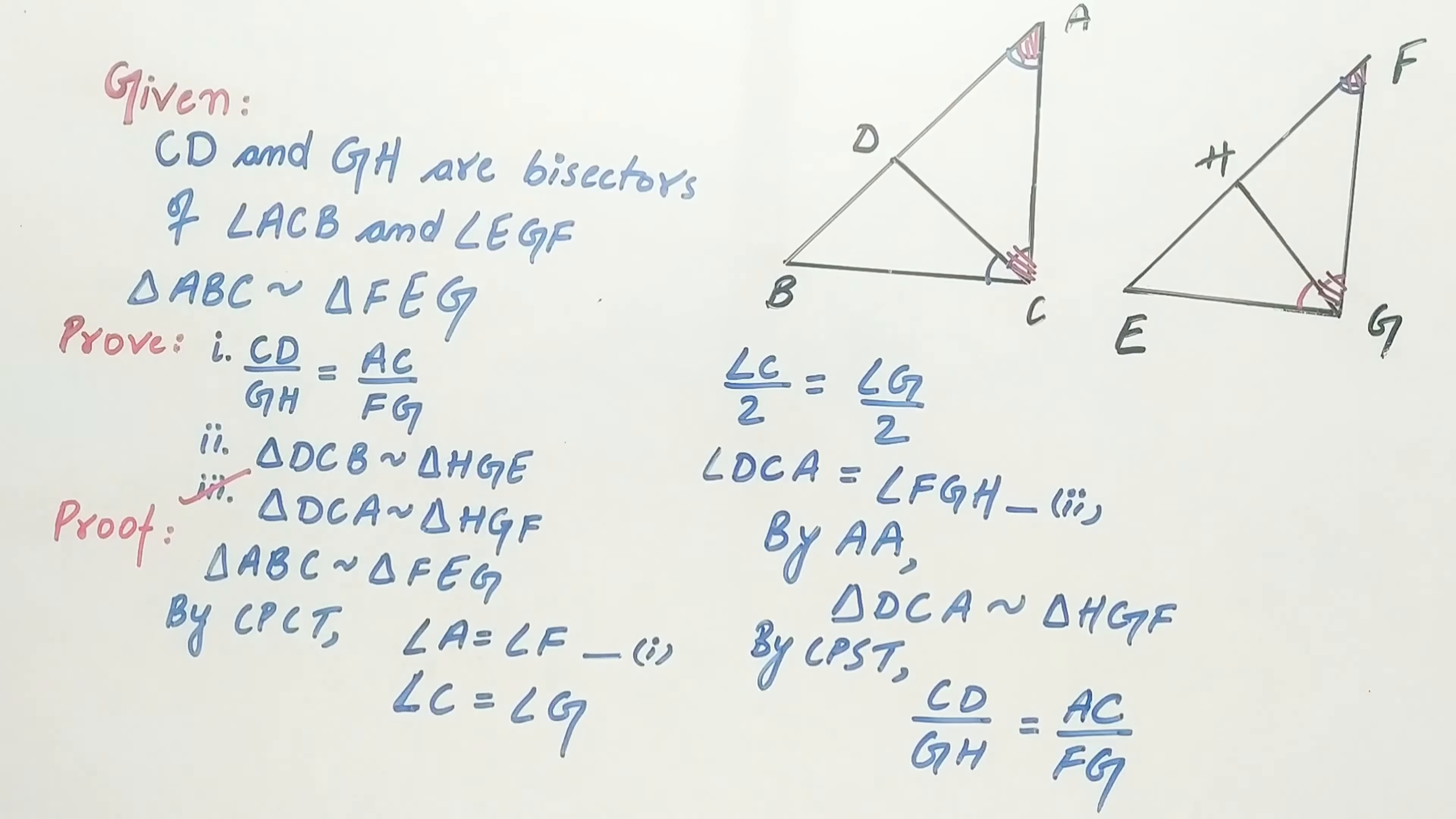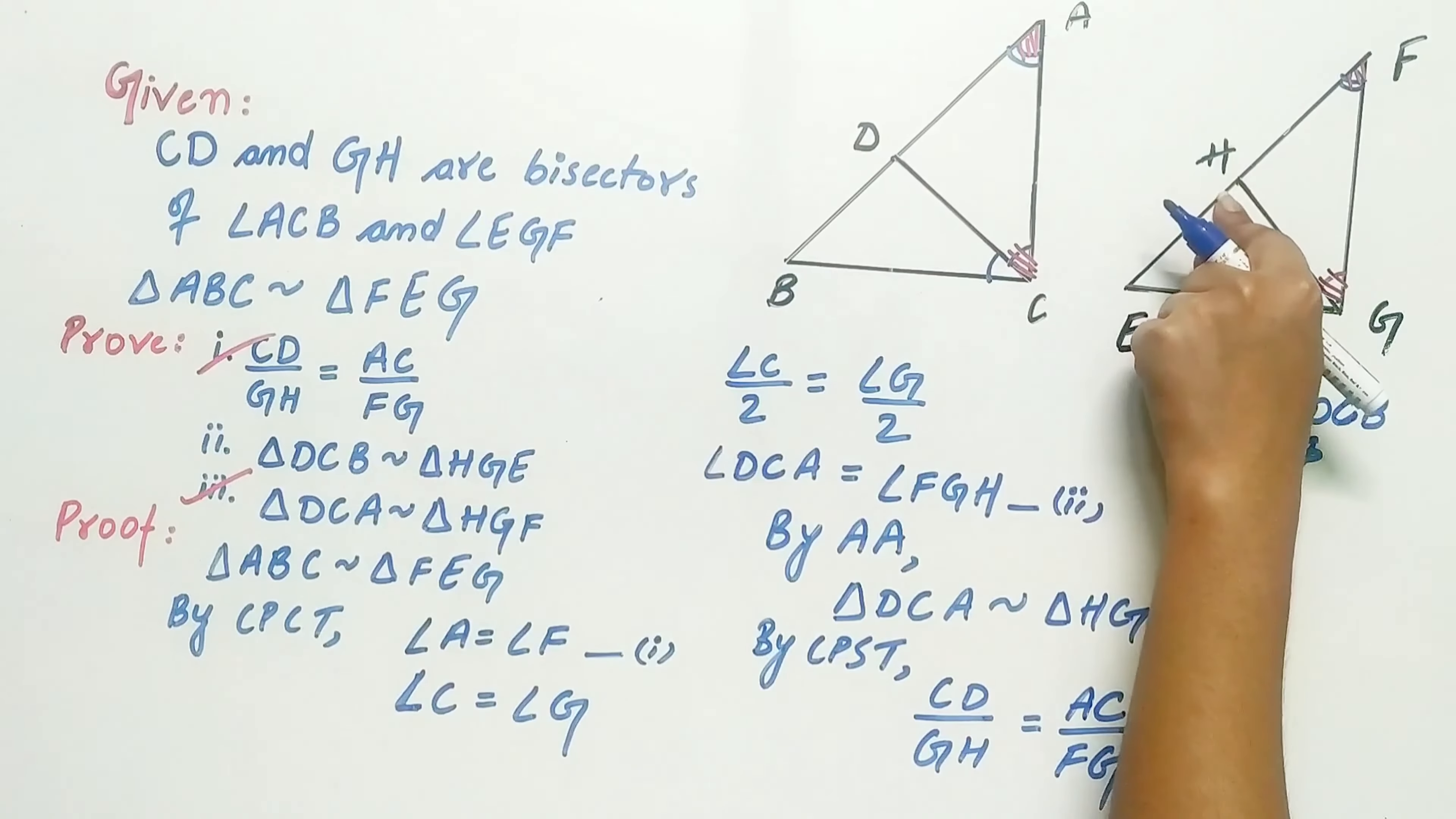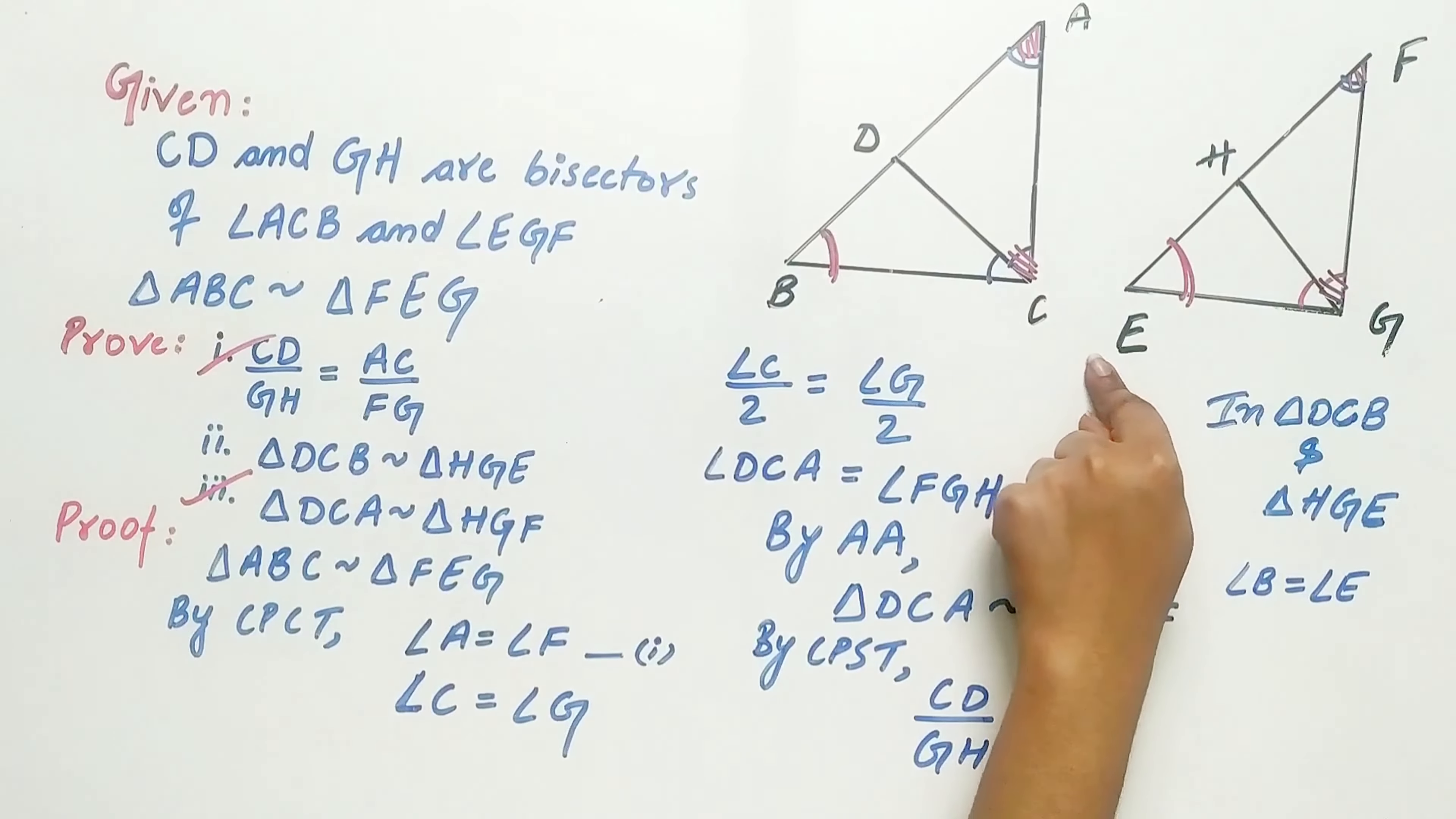And this proves our first part. Now triangle DCB and triangle HGE: angle B is equal to angle E. That means this angle is equal to this angle. Why? Because triangle ACB is similar to triangle FGE.